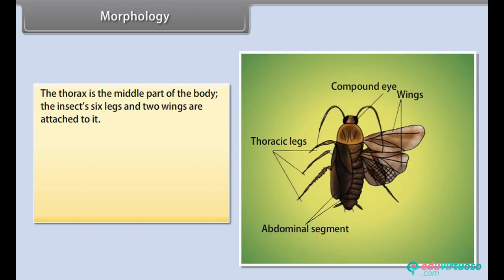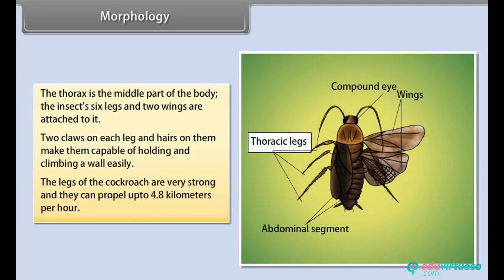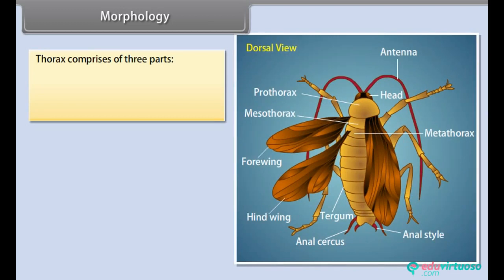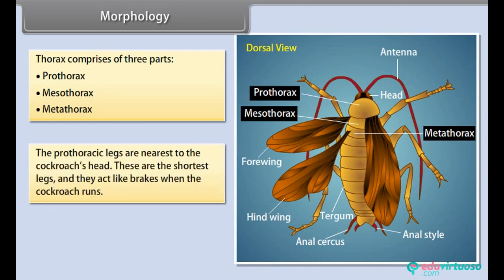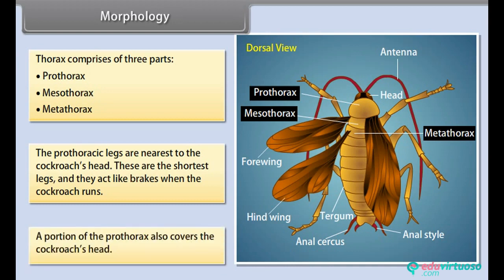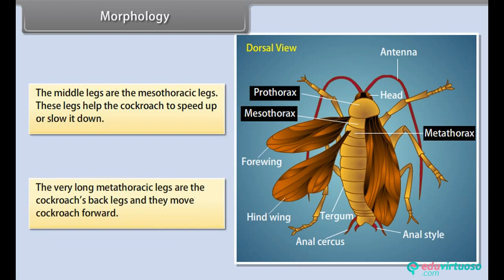Two claws on each leg and hairs on them make cockroaches capable of holding and climbing a wall easily. The legs of the cockroach are very strong and they can propel up to 4.8 kilometers per hour. The thorax comprises three parts: prothorax, mesothorax and metathorax. The prothoracic legs are nearest to the head — the shortest legs — and they act like brakes when the cockroach runs. The mesothoracic legs help the cockroach speed up or slow down, while the very long metathoracic back legs move the cockroach forward.